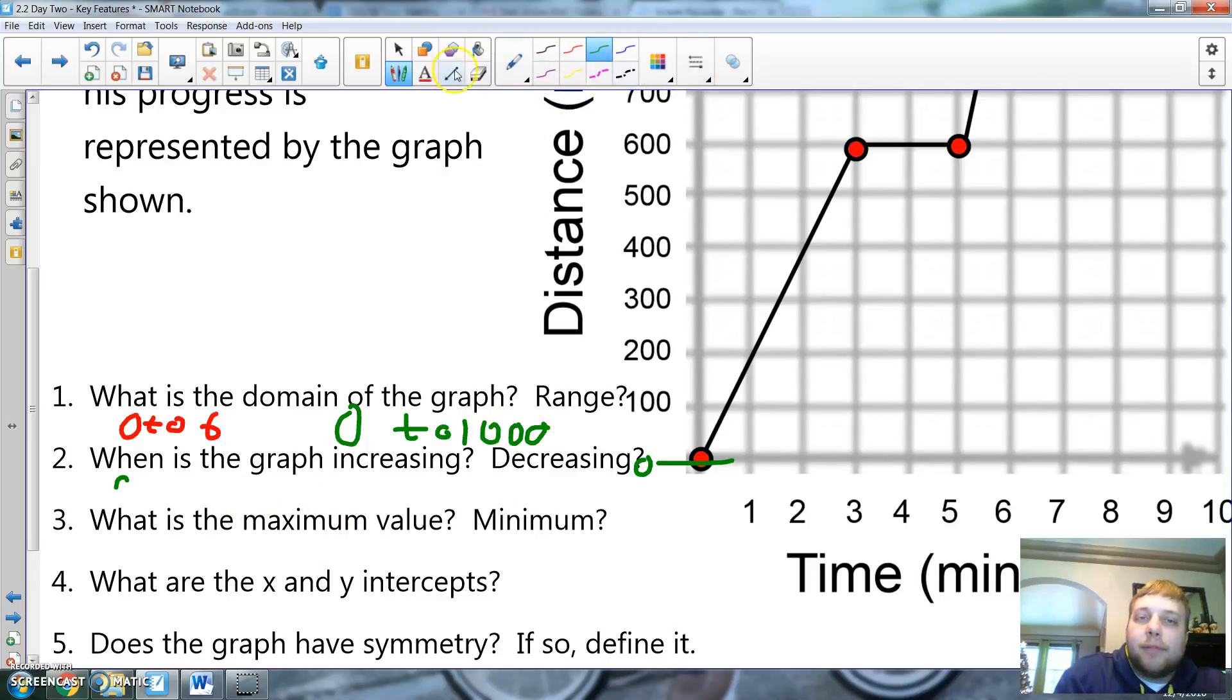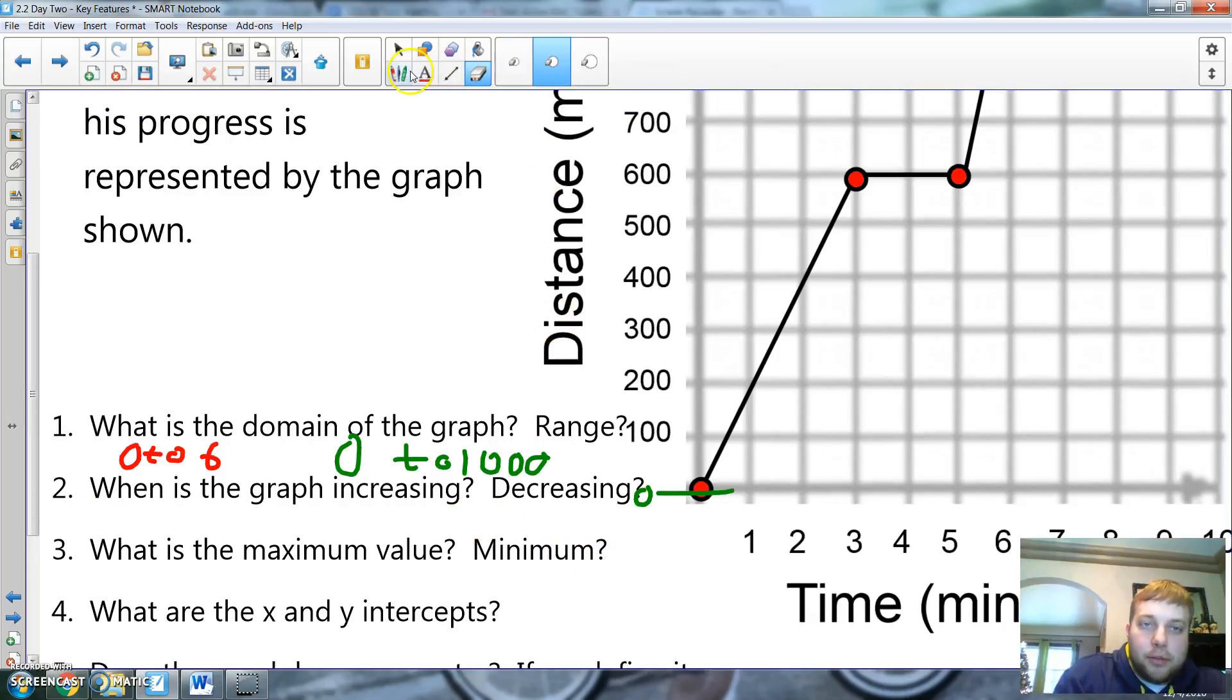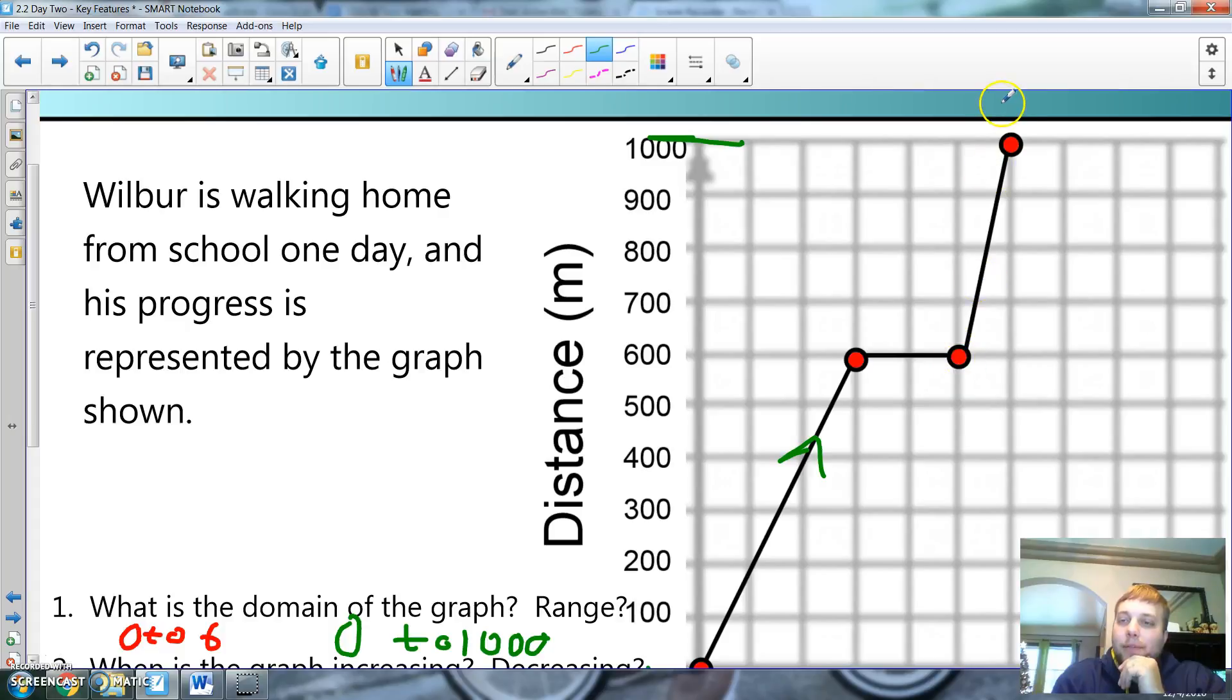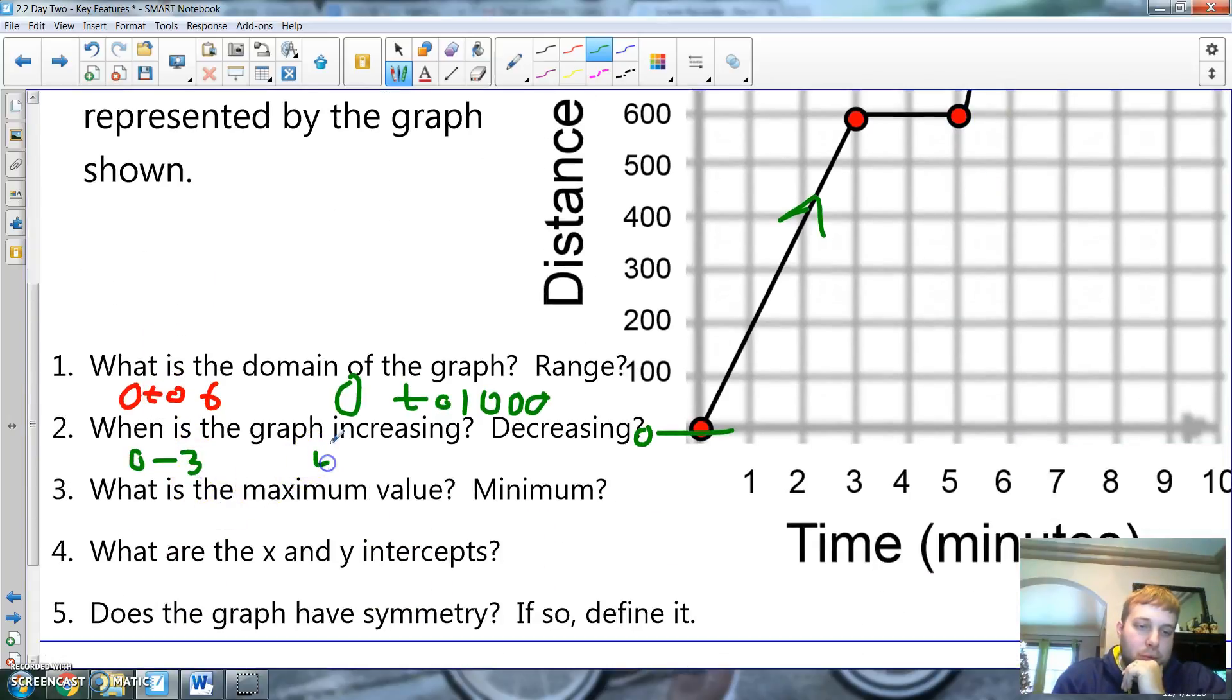When is the graph increasing? It is increasing from, well, let's see, from zero to, where else is it going? To three. So, from zero to three, it's increasing. Would you guys agree? It's going upwards. And then, let's see, it's also increasing from five at 0.5 to six. So, something happened. Something happened at four. I didn't mean to write four there. Five to six.